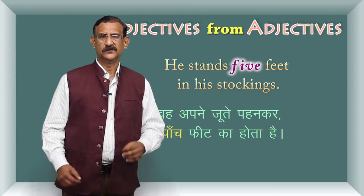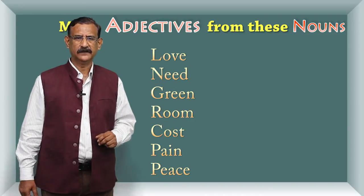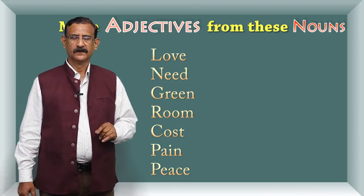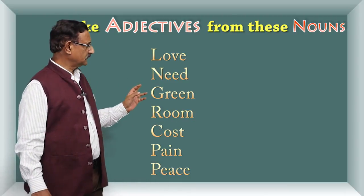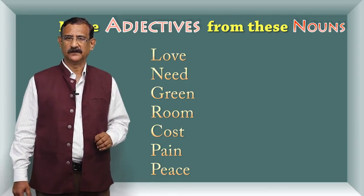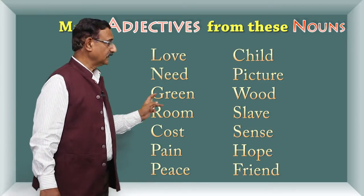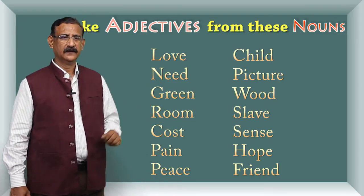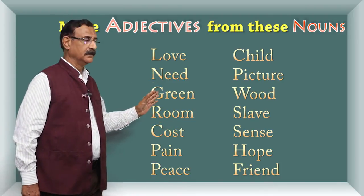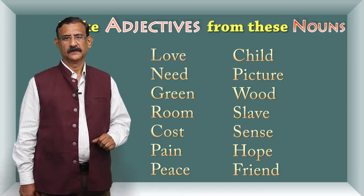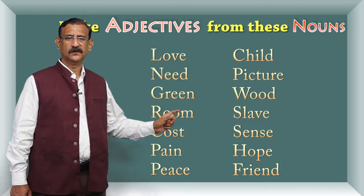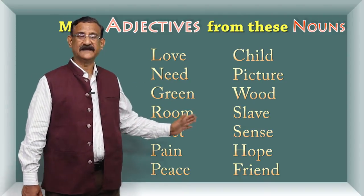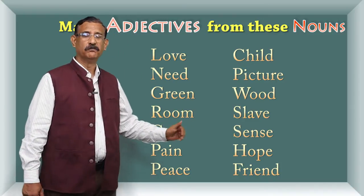They are very useful words. Love is one, second is need, third is green, fourth is room, fifth is cost, sixth is pain, seventh is peace, eighth is child. If you remember child and childlike — childish. Ninth is picture, tenth is wood, eleventh is slave, twelfth is sense, and last you can have hope and friend.